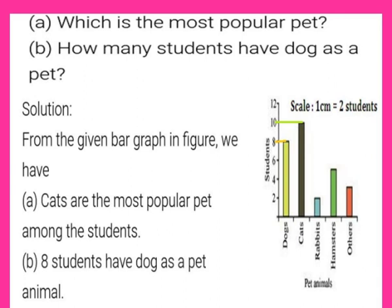Next, subdivision B: how many students have a dog as a pet? From the bar graph, the bar for dogs represents the number 8, so 8 students have a dog as a pet animal.